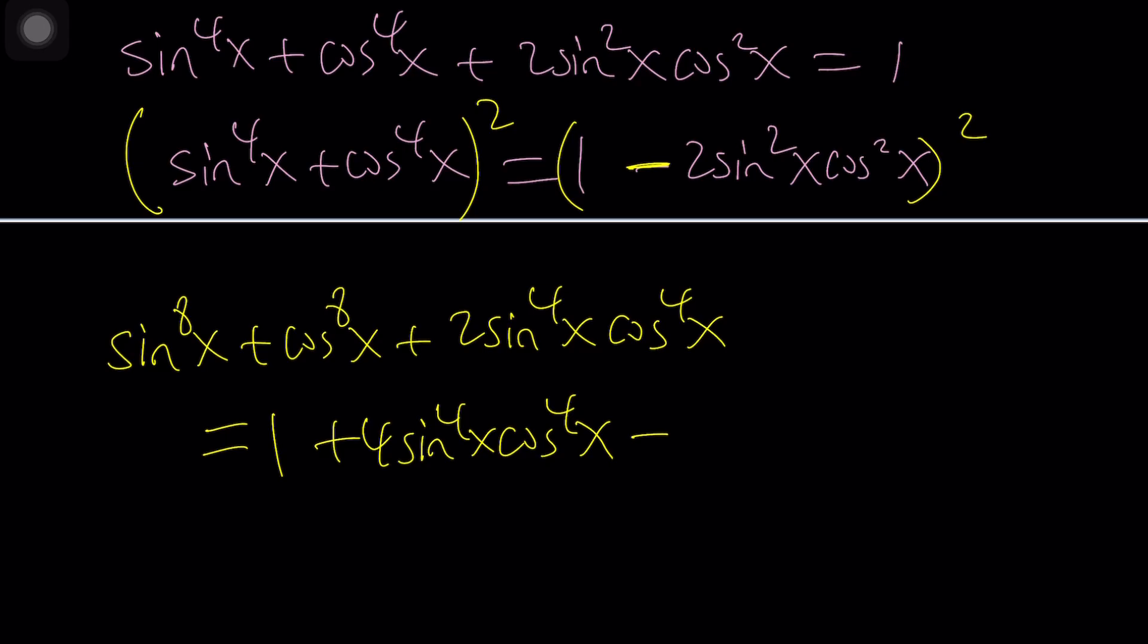four sine x to the fourth cosine x to the fourth plus their product is going to be minus two ab. That's going to give you minus four sine squared x cosine squared x.